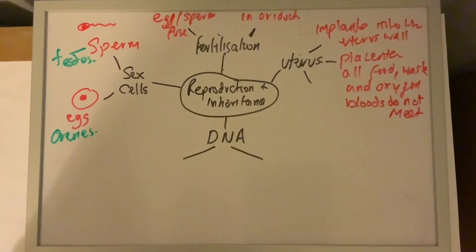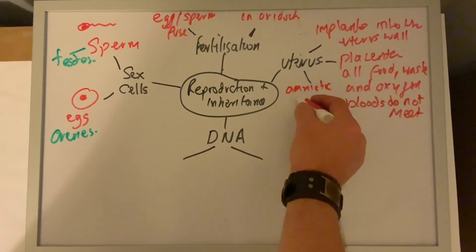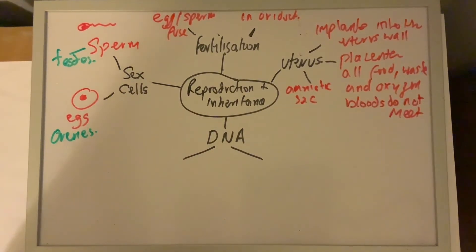The baby is kept safe inside the mum in what's called an amniotic sac. This is filled with fluid, and when you hear the term the mother's water has broke, this is what has broke, what's been released. The water is there to stop the baby getting any knocks.